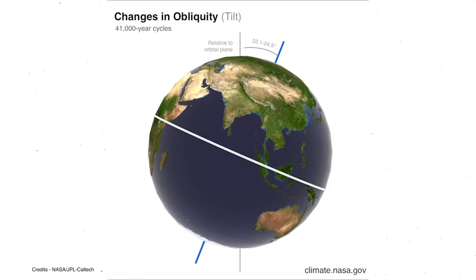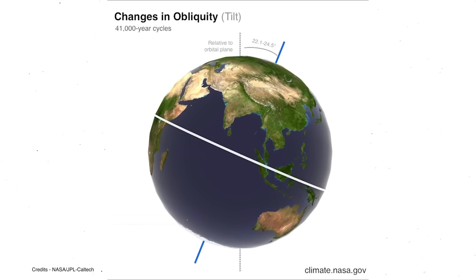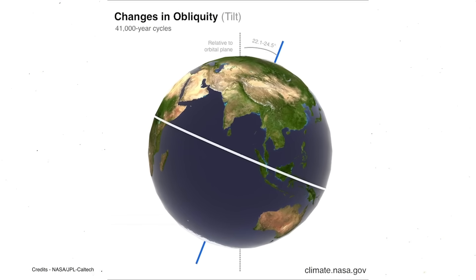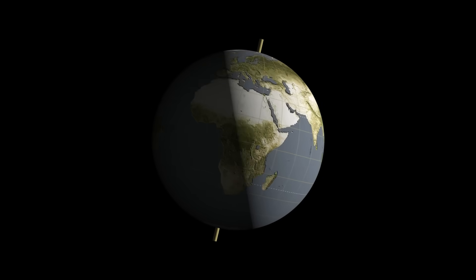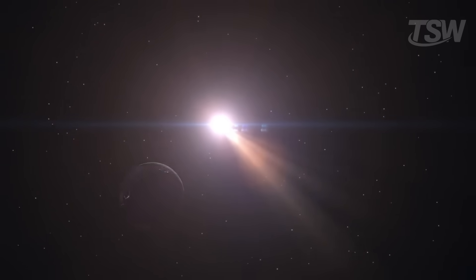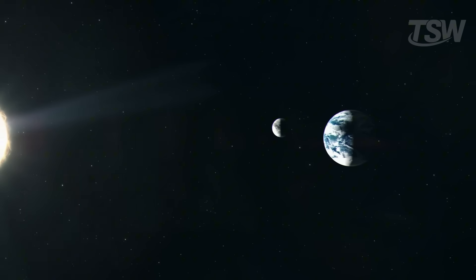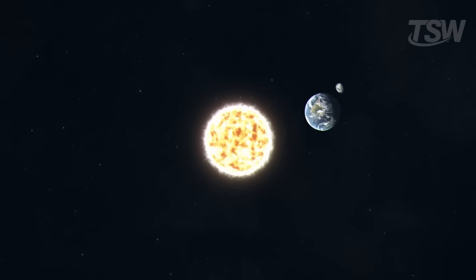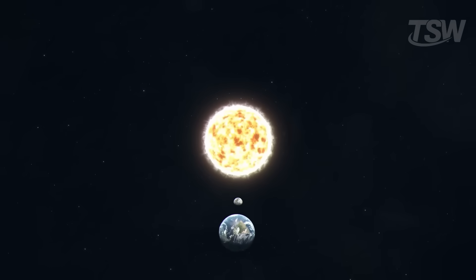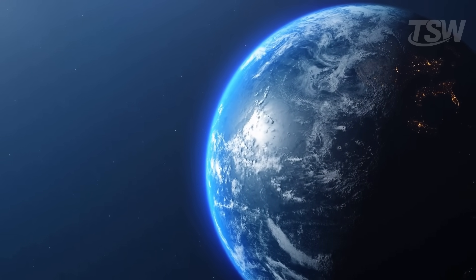Obliquity, on the other hand, is the angle of Earth's axial tilt in relation to the plane of its orbit. This angle varies between about 22.1 degrees and 24.5 degrees in a cycle of roughly 41,000 years. When the tilt is greater, the hemispheres receive more solar radiation during their respective summers, which intensifies the seasons — hotter summers and colder winters. In contrast, when the tilt is smaller, the seasons become milder. This variation has a particularly strong impact in high latitudes, like the polar regions, where the presence or absence of ice can amplify climate changes.